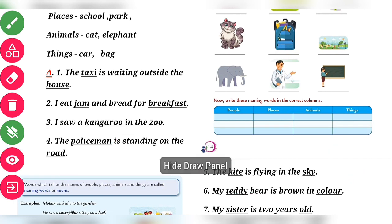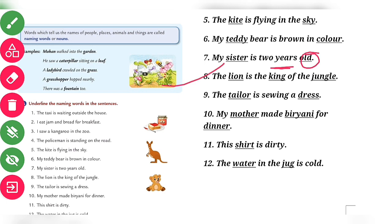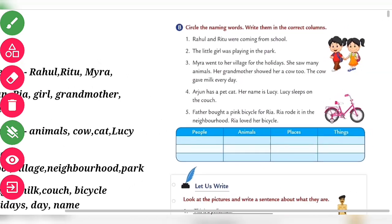Number seven: my sister is two years old — sister and years. Number eight: lion, king, and jungle. Number nine: tailor and dress. Number ten: mother, biryani, and dinner. Number eleven: shirt. Number twelve: water and jug.